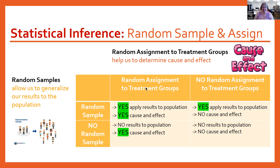The best place to be is the top left box — that's a random sample and random assignment to treatment groups. That means you're going to get cause and effect, and you can apply those results to your population.